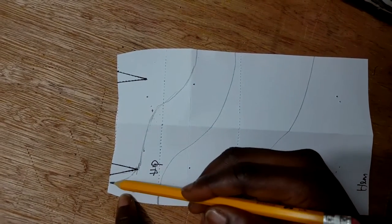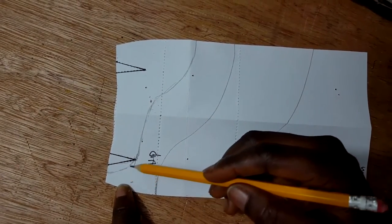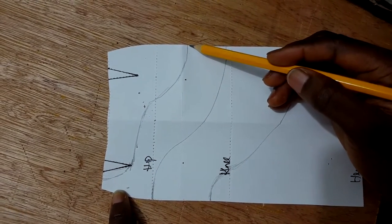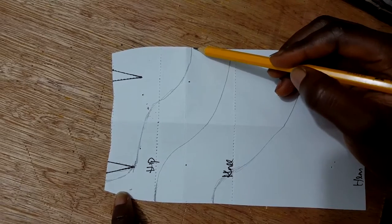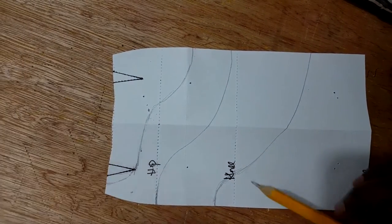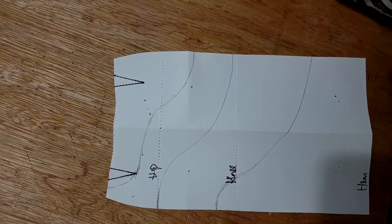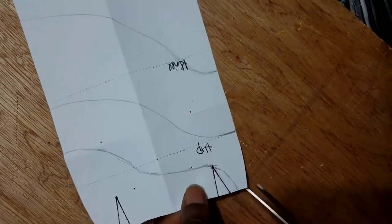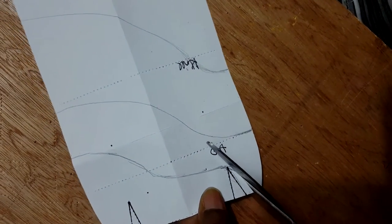So if I cut from here through the point of the darts to the side of the skirt, once this goes off I'll be able to close this dart. I'll show you. I'm just going to cut through this design line. I only did that for illustration.